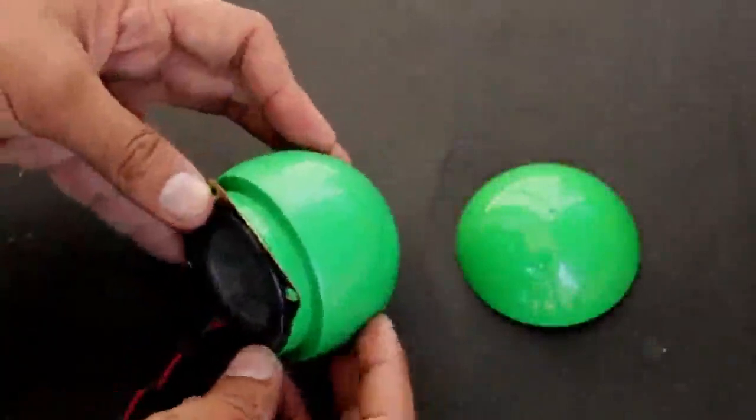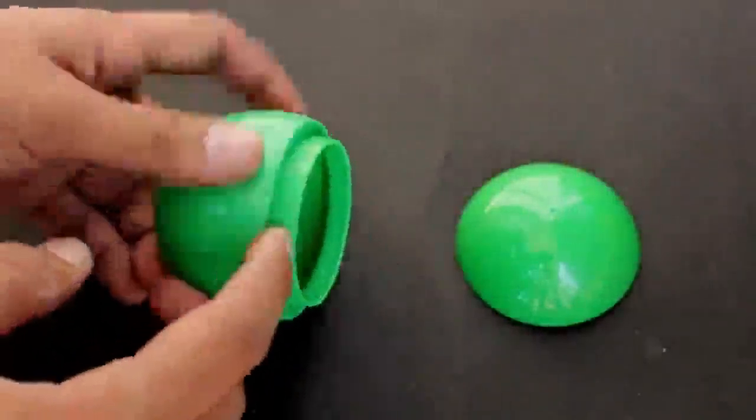Firstly, grab the GEMS ball and remove the contents inside. Now take the speaker to fix it inside the ball. Remove the screw portion of the ball using a blade.